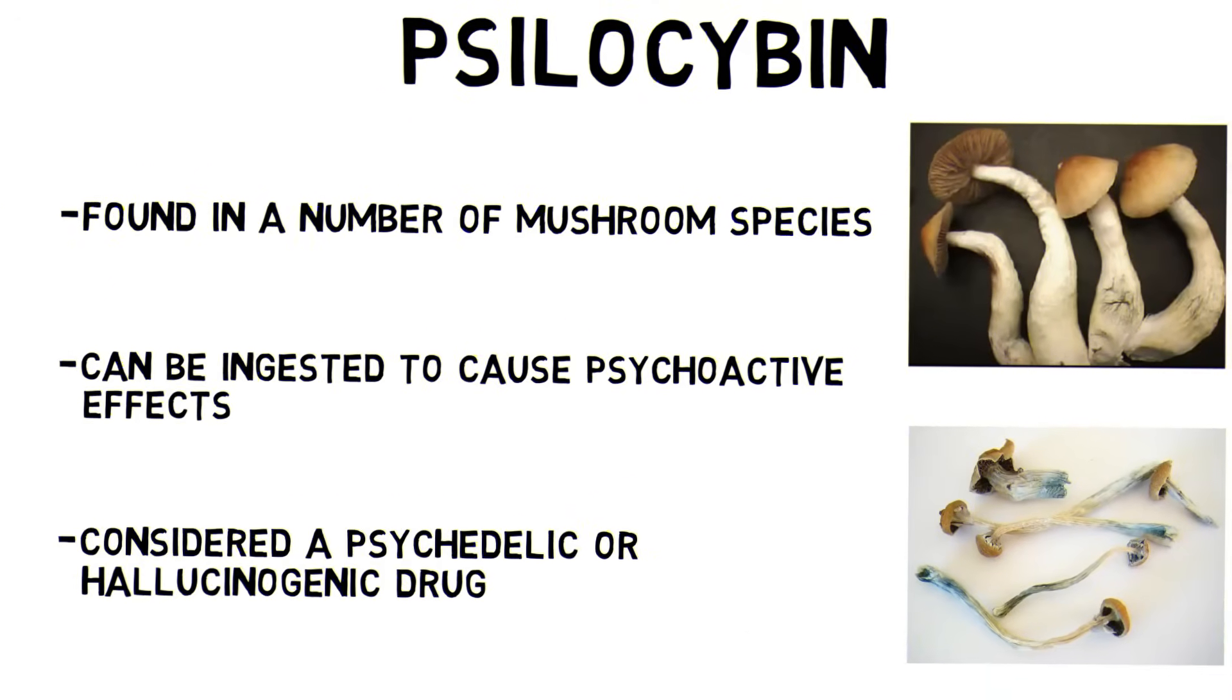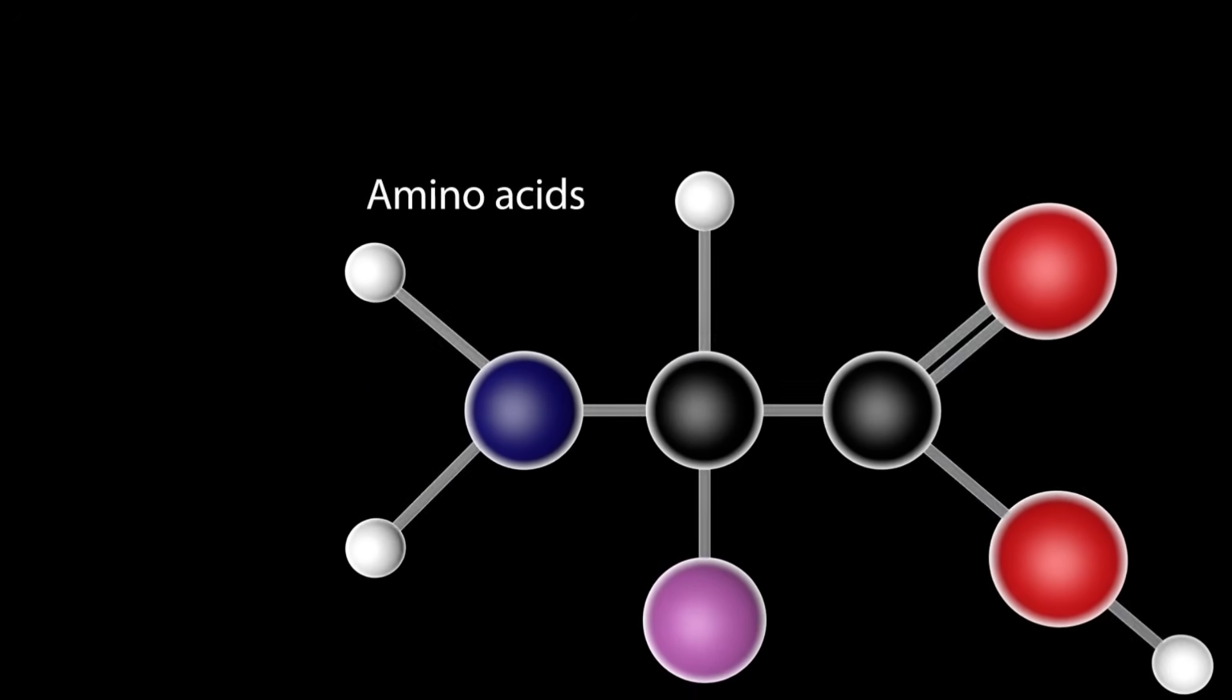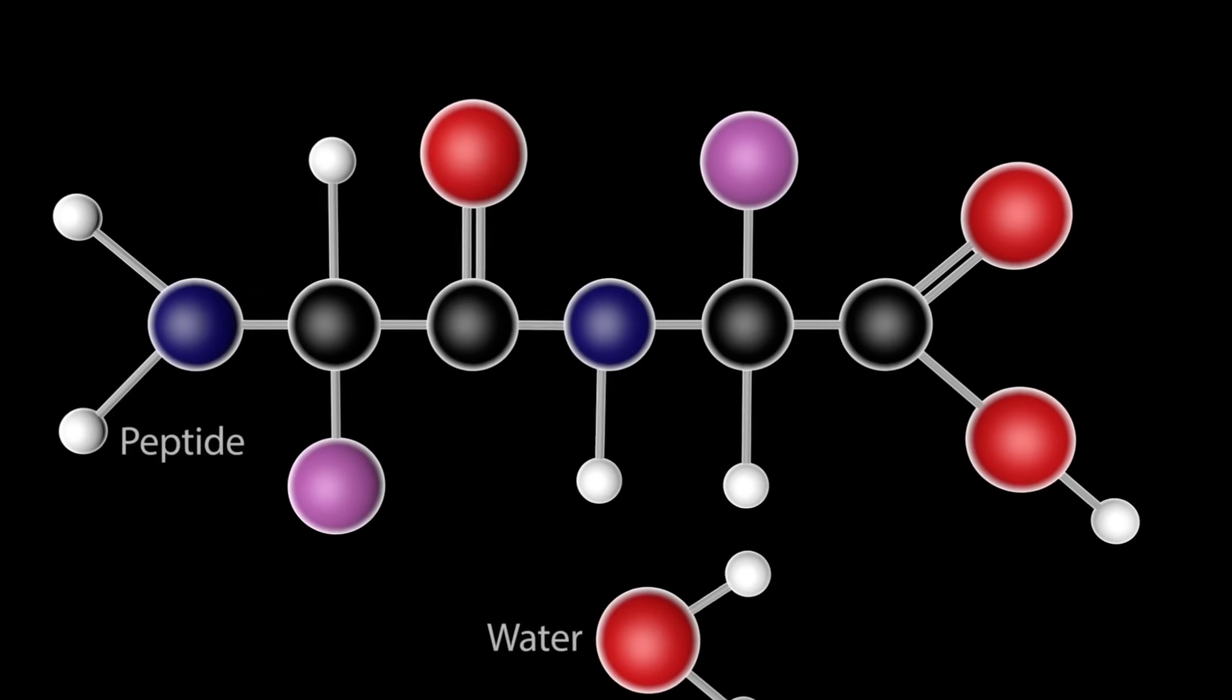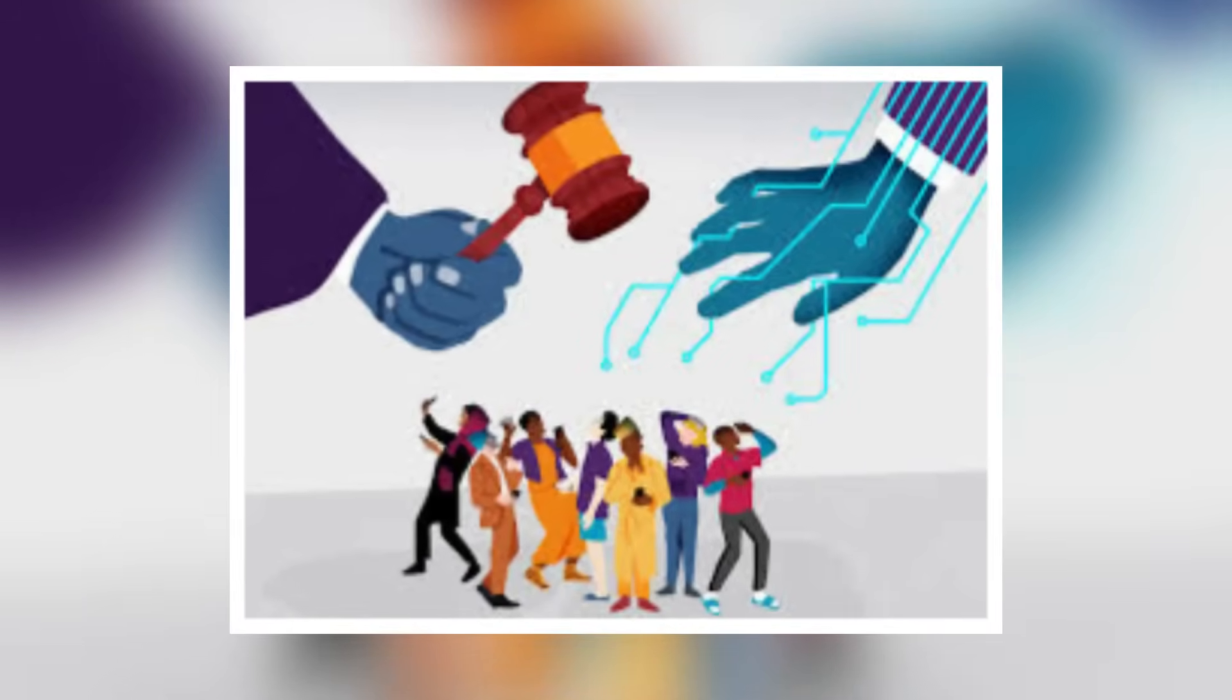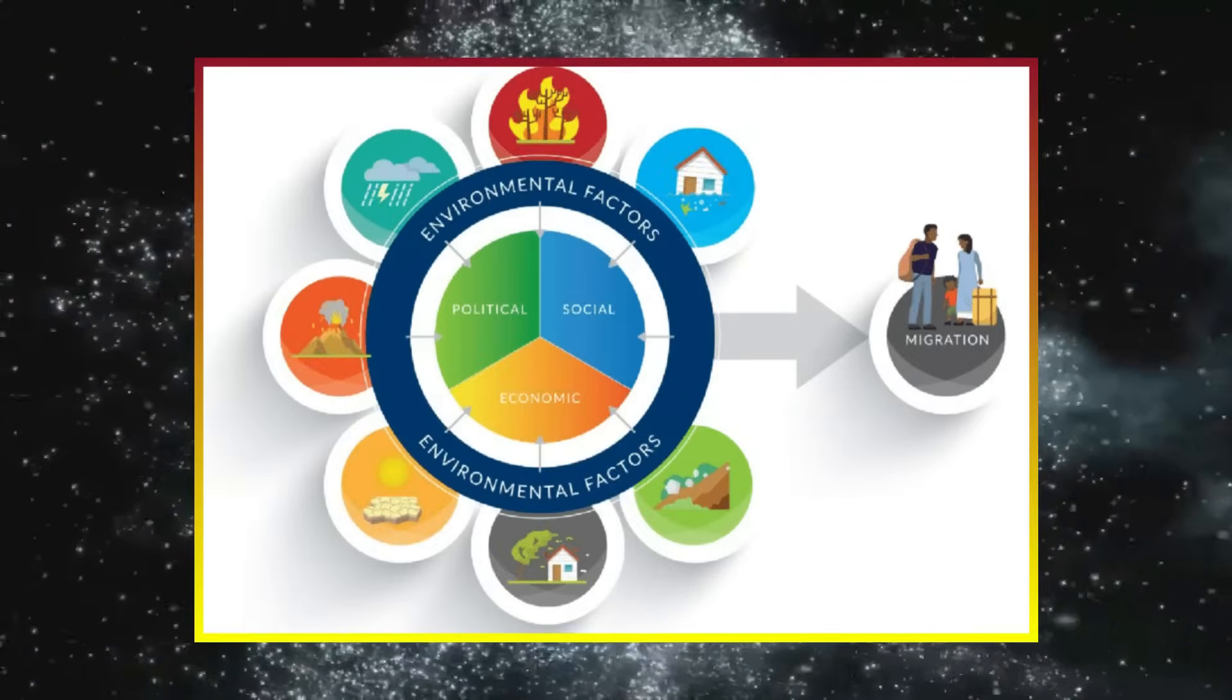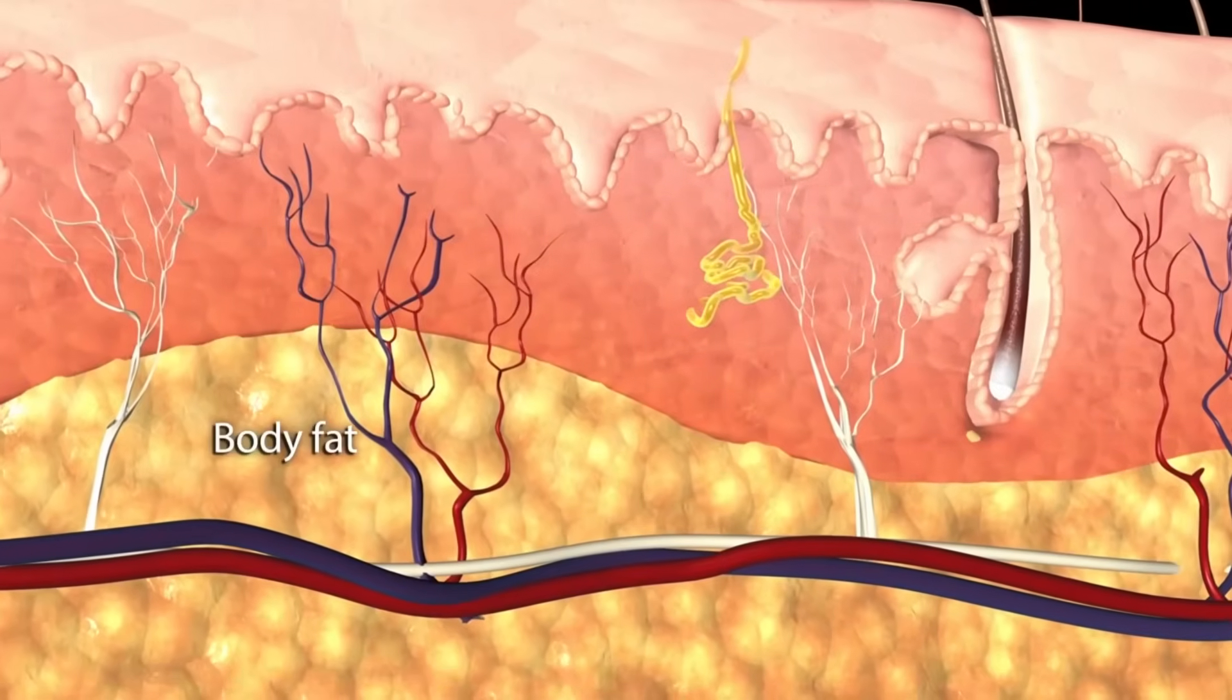Despite being naturally derived from plants and fungi, Schedule I compounds have been shrouded in controversy for decades. Their legal status has long been the subject of fierce debate, with governments suppressing research and criminalizing their use. But what beyond the obvious social and political reasons, there may be a deeper, hidden rationale.